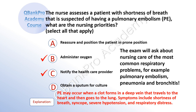The correct answer is B, administer oxygen, and C, notify the healthcare provider. Explanation: PE may occur when a clot forms in a deep vein that travels to the heart and then goes to the lung. Symptoms include shortness of breath, syncope, severe hypotension, and respiratory distress. The exam will ask about nursing care of the most common respiratory problems, for example, pulmonary embolism, pneumonia, and bronchitis.